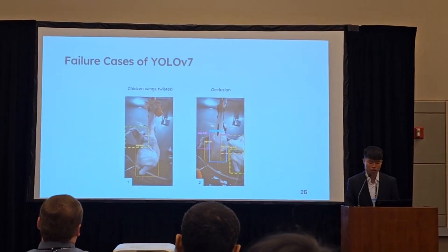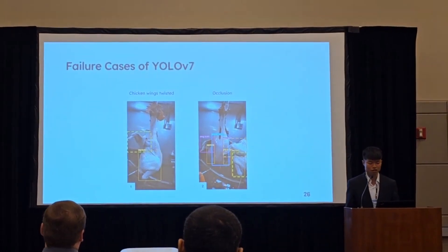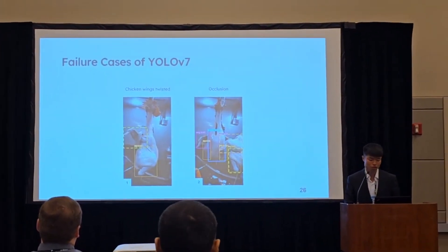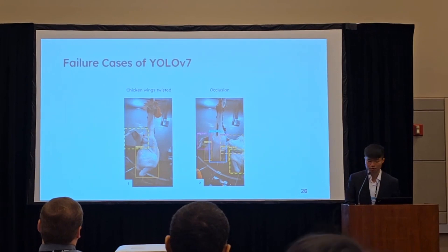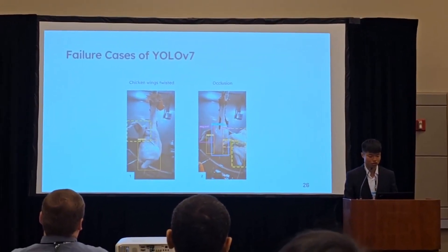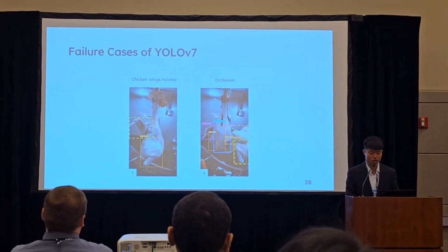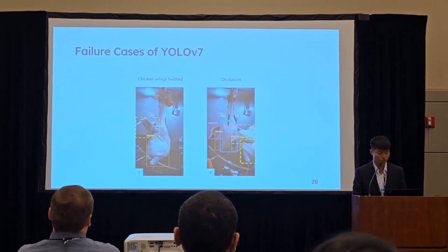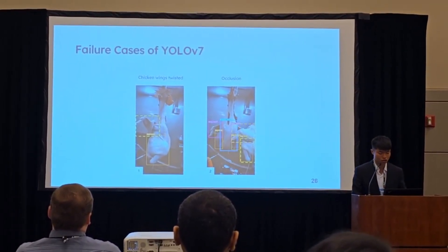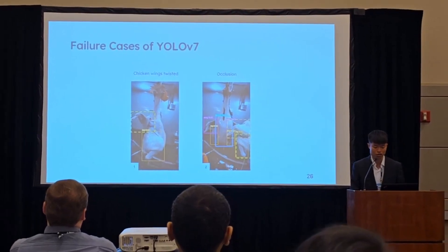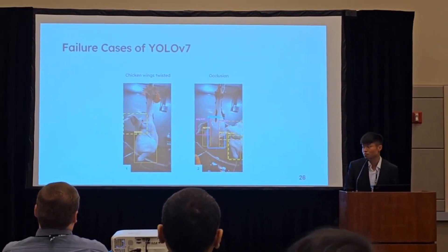However, the model can still make some mistakes in certain situations. For example, in case 1 on the left picture, the chicken wings are twisted together, so the model cannot recognize them. In case 2 on the right side picture, the carcass is occluded by a larger carcass, leading to a recognition error.